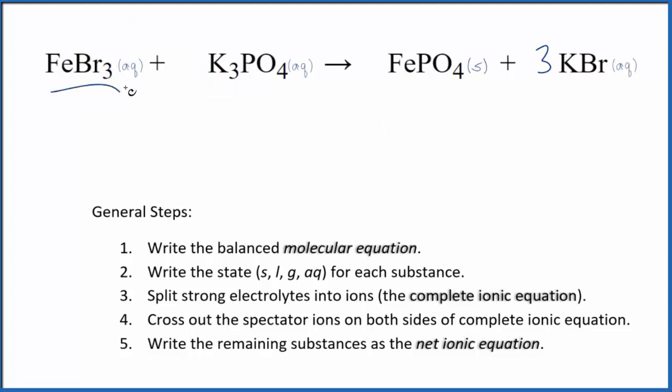Compounds with the bromine atom, in general, they're soluble, so both of these are going to be aqueous. Phosphate ion, when you have something with a phosphate ion, in general it's insoluble unless it's with a group 1 element like sodium or potassium. Potassium phosphate, that's soluble, aqueous,